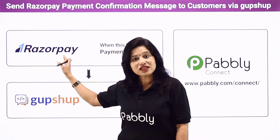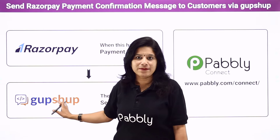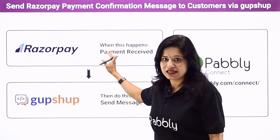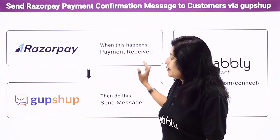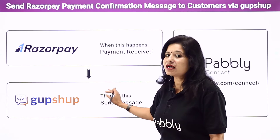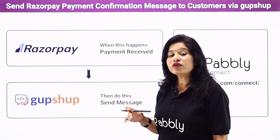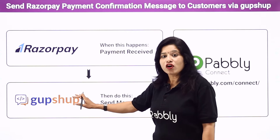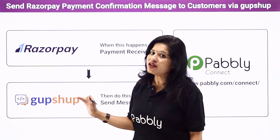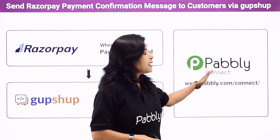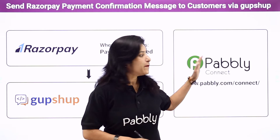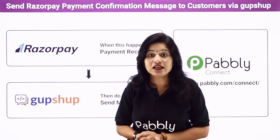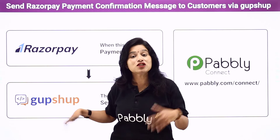Razorpay is a payment gateway and GupShop is a messaging application. The idea here is that whenever a customer makes a payment through your Razorpay payments link, automatically a payment confirmation message should be sent to your customer. For this we need to create a connection between Razorpay and GupShop using a software application named PabblyConnect, which is an automation and integration software.